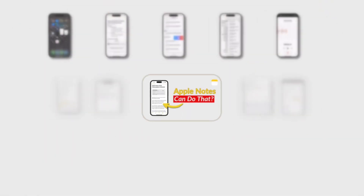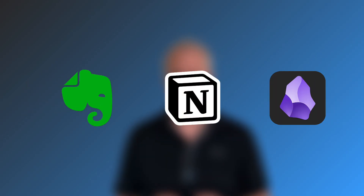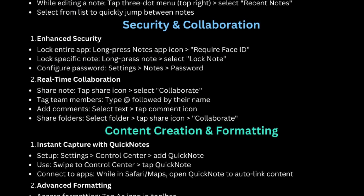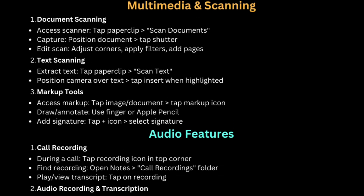Apple Notes is the perfect notes app that's been hiding in plain sight. I used to bounce around between apps like Evernote, Notion, and Obsidian, always chasing the perfect setup. But I know what you're thinking — Apple Notes, seriously? So in this video, I'm going to show you 15 powerful features hidden inside Apple Notes that will completely transform the way you capture, organize, and use information. And if you stick around until the end, I'll show you how to get a free PDF with all these tips. So let's jump in.